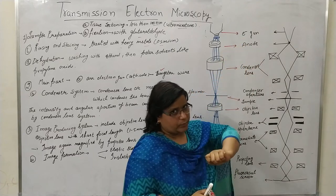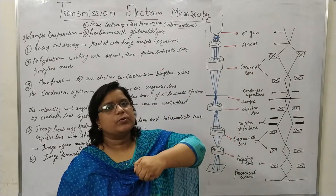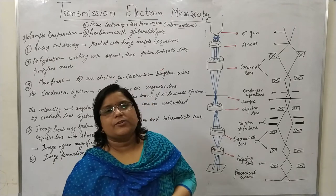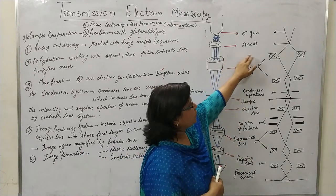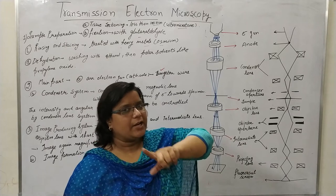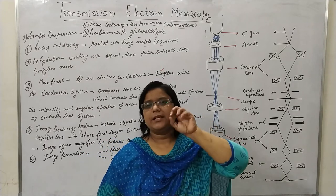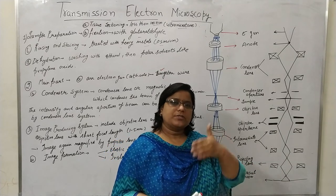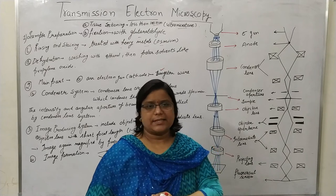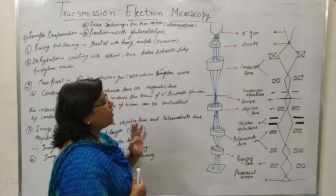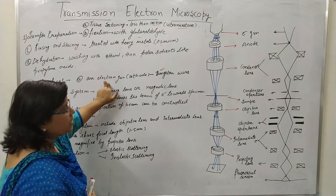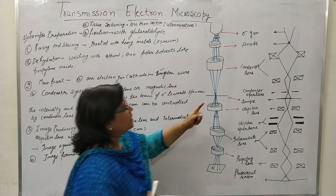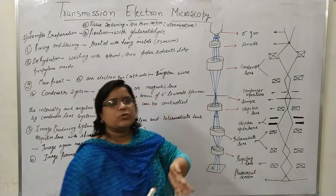When electrons are released due to high electricity from the cathode, they need to be given a proper direction. This is done by the anode. The electrons are negatively charged particles and they are attracted toward the positive anode. So the main parts so far are: the electron gun (cathode), and then the anode.